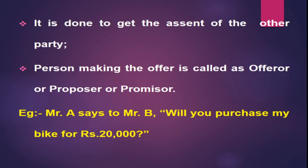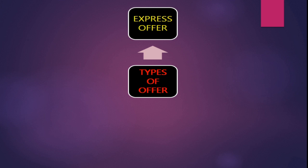The Indian Contract Act says there are six types of offer. The first is express offer. Express means the words are either written or spoken orally, though generally only the written format is accepted throughout India to avoid disputes. For example, Mr. X writing to Mr. Y asking 'Can you purchase my car for rupees five lakhs?' — this is made in written format and is called an express offer.